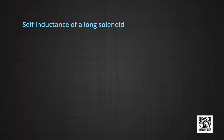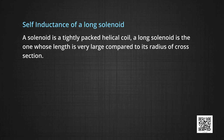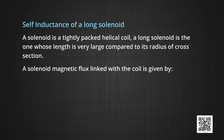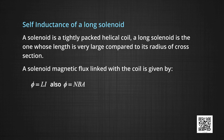Let us find out the self-induction of a long solenoid. A solenoid is a tightly packed helical coil. A long solenoid is one whose length is very large compared to the radius of cross-section. For a solenoid, magnetic flux linked with the coil is given by phi equal to L into I. Also, magnetic flux is defined as N into B into A, where N is the total number of turns, B is the magnetic field associated with the coil, and A is the area of cross-section. So L into I is equal to NBA.